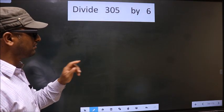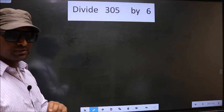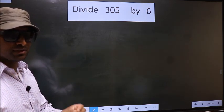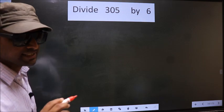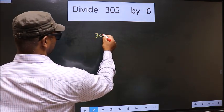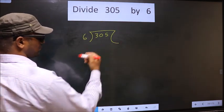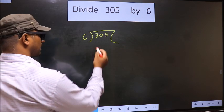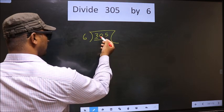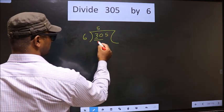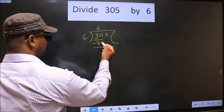Let's divide 305 by 6. Many people make a mistake doing this division — I'll let you know what it is. First, frame it this way: 3 is smaller than 6, so we take two digits — that is 30. In the 6 times table, 6 × 5 = 30. Subtract: 30 minus 30 is 0.